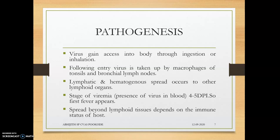In pathogenesis, the virus gains entry through ingestion or inhalation. It is then taken up by macrophages of the tonsils and bronchial and laryngeal lymph nodes, where it multiplies and produces several viral copies. Via the lymphatic system, it moves into systemic circulation — a process known as hematogenous spread. The presence of virus in blood is the stage of viremia, leading to fever around four to five days post-infection. This is the first phase of fever.